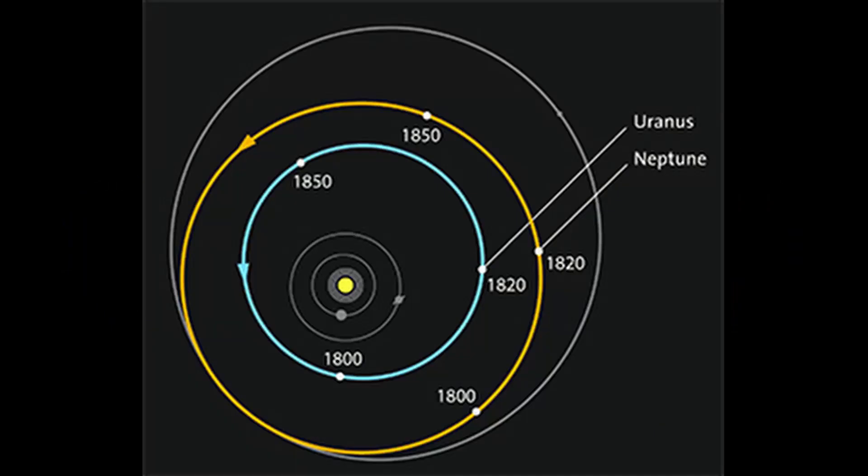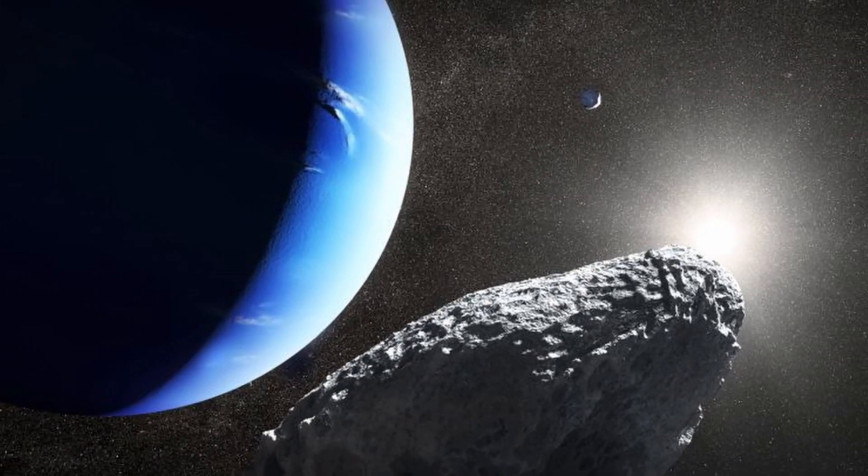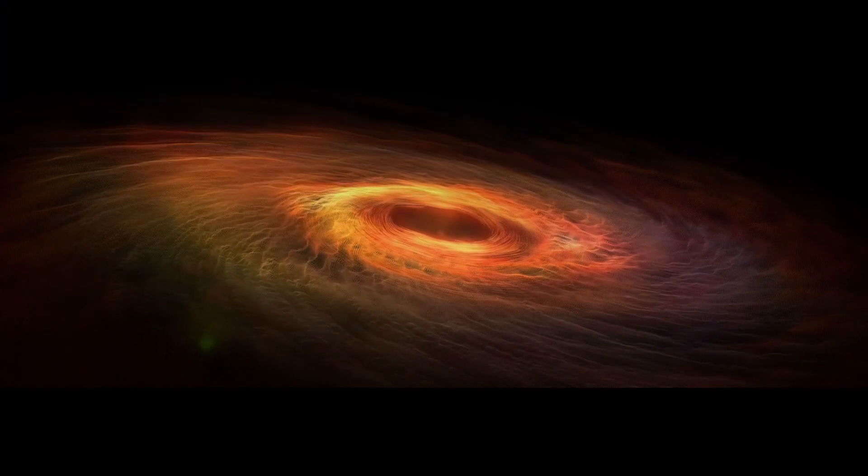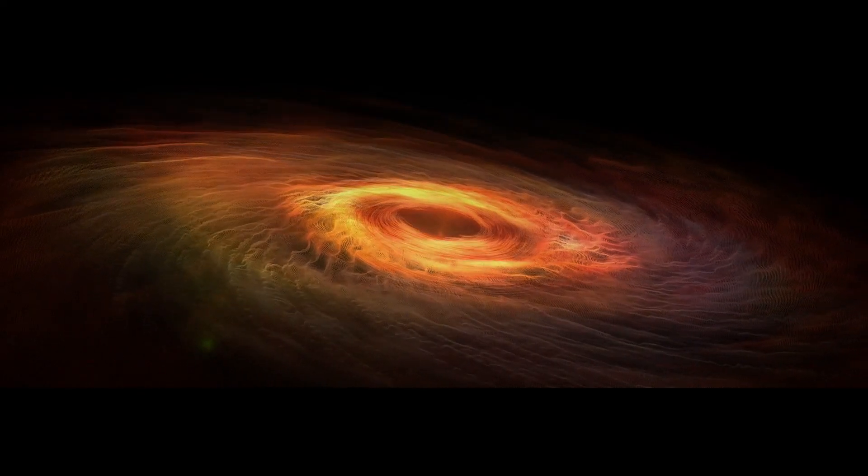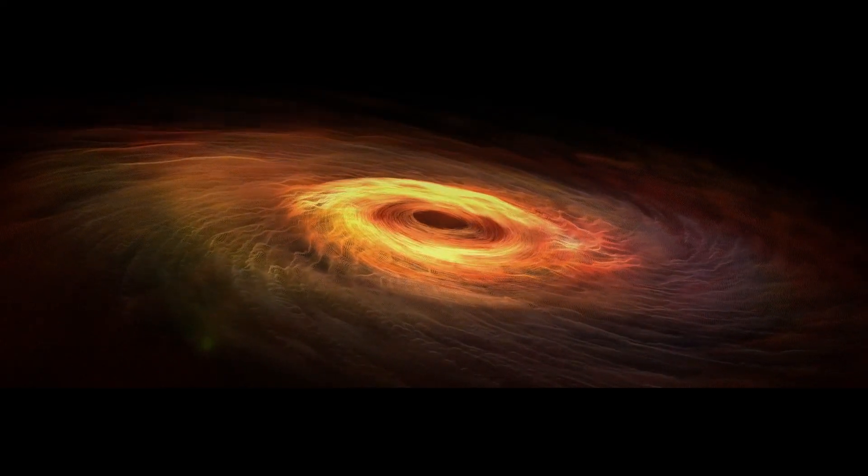It takes around 16 hours to rotate once, a Neptunian day, and about 165 Earth years to orbit the Sun. This is a Neptunian year. On 11 July 2011, Neptune completed its first full orbit since its discovery in 1846.